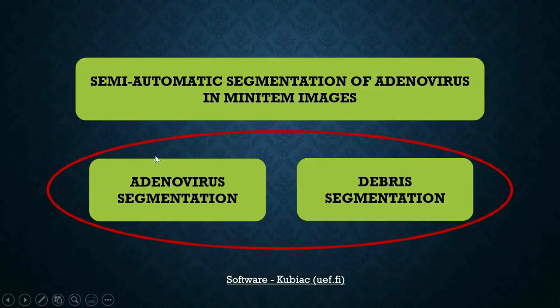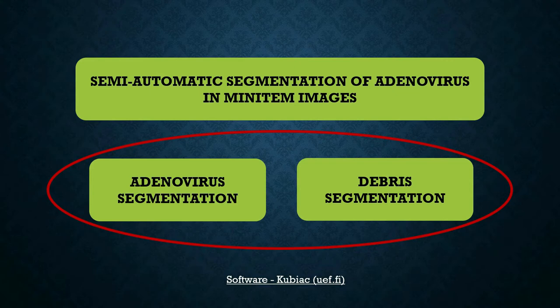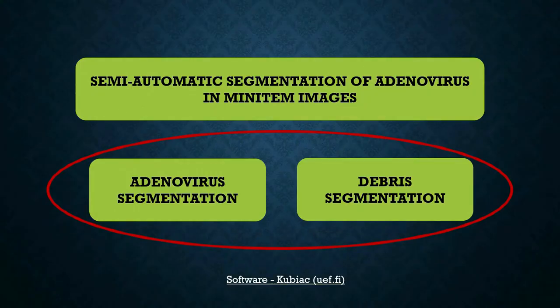With semi-automatic segmentation, it is important to understand that this can be understood as the process whereby automatic segmentation is followed by manual checking and editing of the results obtained automatically. It may happen that the results are not good enough and therefore need some checking and editing before they can be presented.